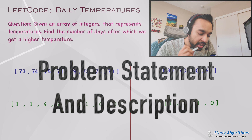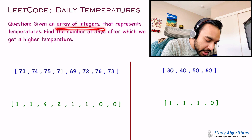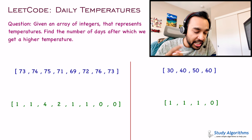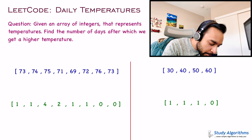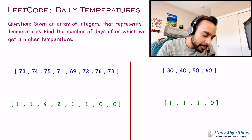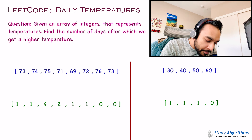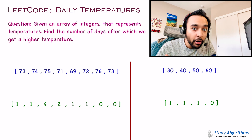Let us quickly make sure that we are understanding the problem statement correctly. You are given an array of integers that represents the temperature at each day. So if I have this test case, the temperature of day 1 is 73, day 2 is 74, day 3 is 75 and so on. Given all of this, you have to find an output array that contains the number of days after which we get a higher temperature for each of the days.